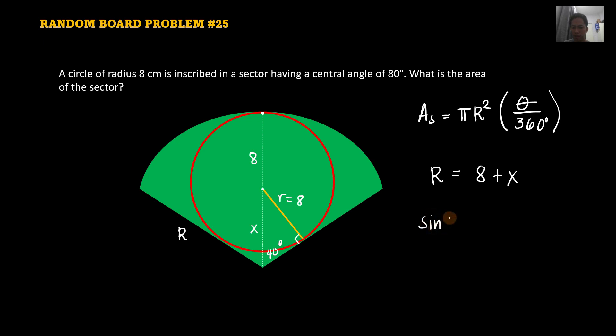That's opposite over the hypotenuse x. So that is the hypotenuse of the right triangle. So all over x. So therefore, x is just 8 over sine 40 degrees.